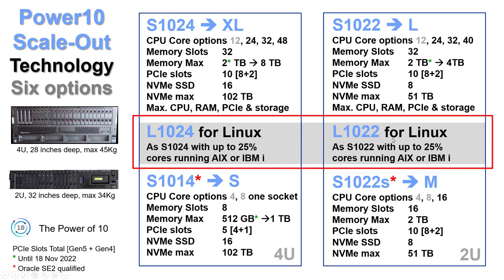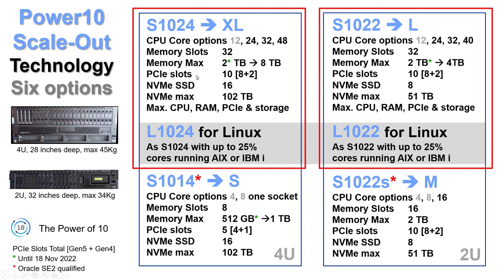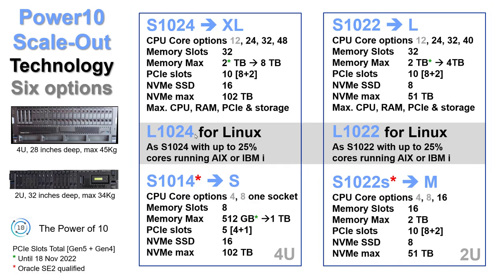There is an S1024 and an L1024. The L1024 is for running Linux, likely at a lower price, but IBM generously allows 25% of the cores to run AIX or IBM i combined, even though it's classified as a Linux machine. Configuration details are exactly the same for the S and L models. Now let's go into the main details of each machine — I'll be covering the S1024 and L1024 together, and the same for the S1022 and L1022.